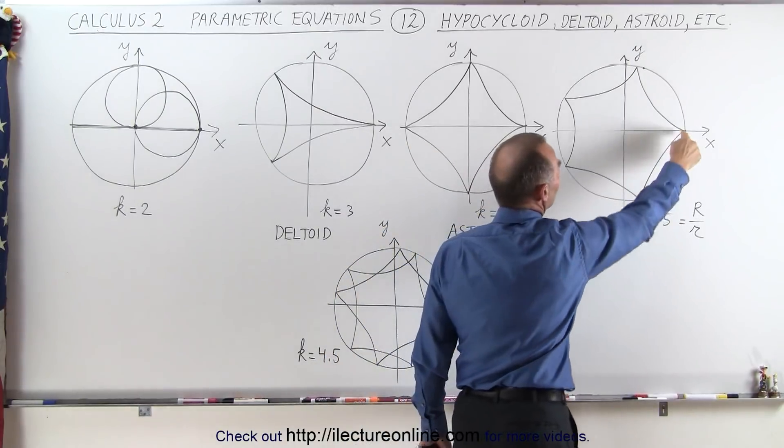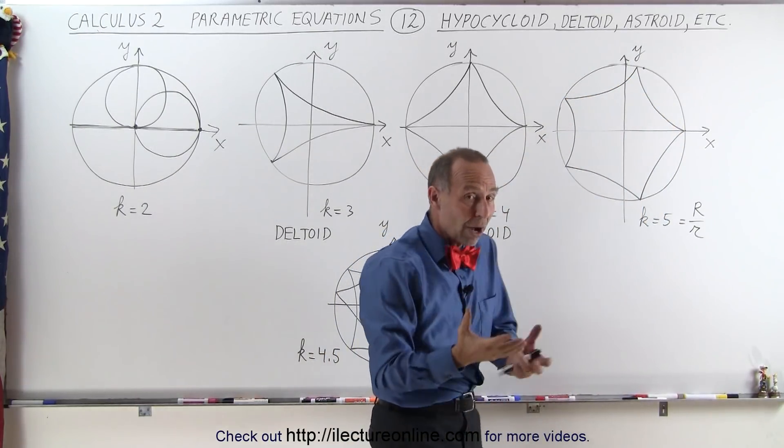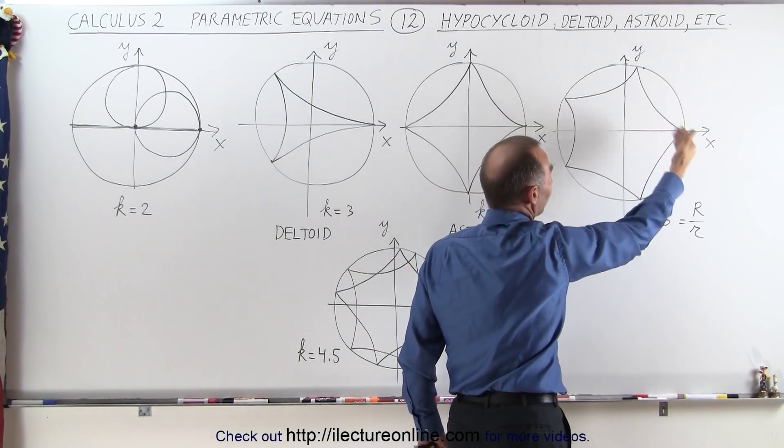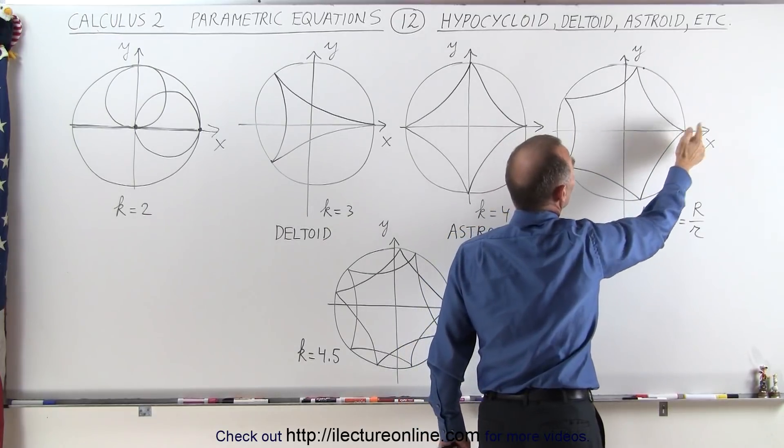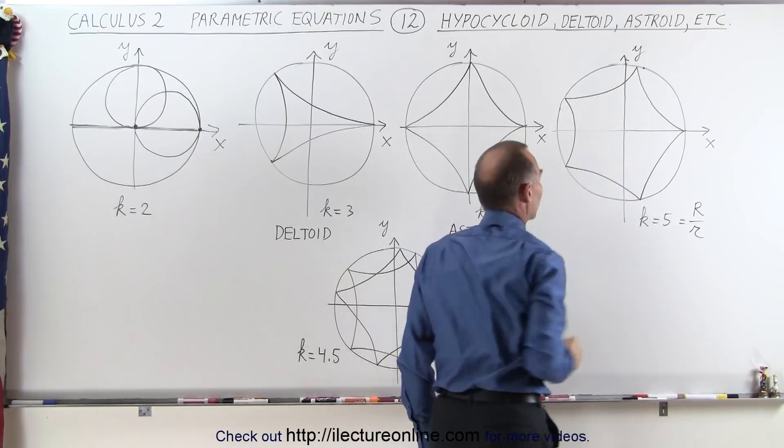When k equals 5, you can see five points like that. And the way to draw them, if you have five points, you take 360 degrees divided by 5, that gives you 72 degrees each, so for every 72 degree angle, you'll have a point on the edge of the circle like that.